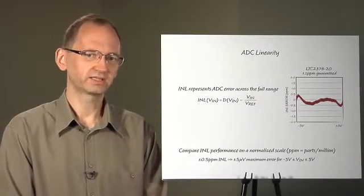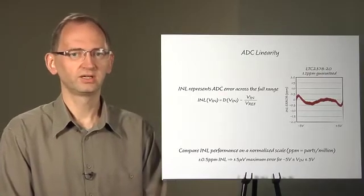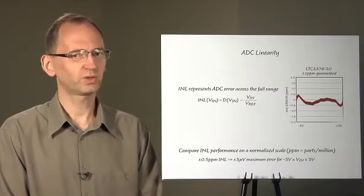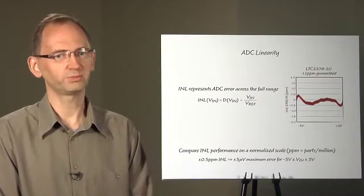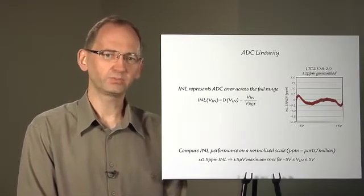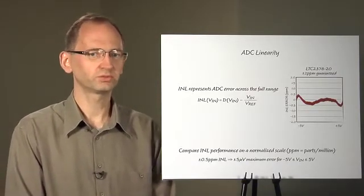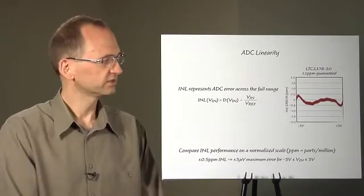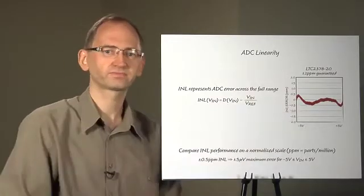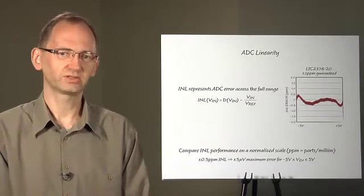Now, a 20-bit A2D can provide 2 to the 20th, or about 1 million distinct codes, implying that the separation from one code to the next is about 1 ppm. So you might ask, how is it even possible for the A2D to evaluate an input signal with a resolution better than 1 ppm, as it is implied by this figure? In order to answer that question, we need to consider A2D noise.